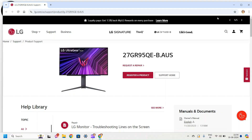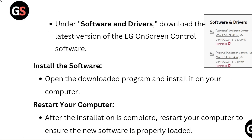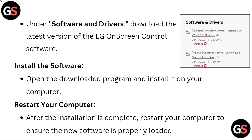Scroll down to the support section and click on Manuals and Downloads. Under Software & Drivers, download the latest version of the LG on-screen control software. Then open the downloaded program and install it on your computer.